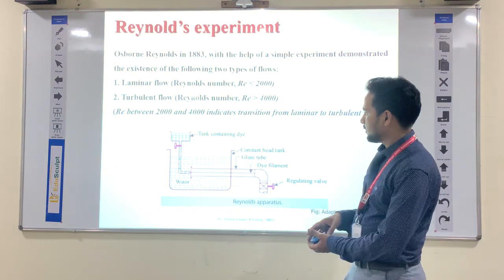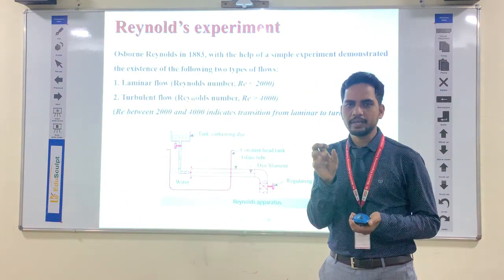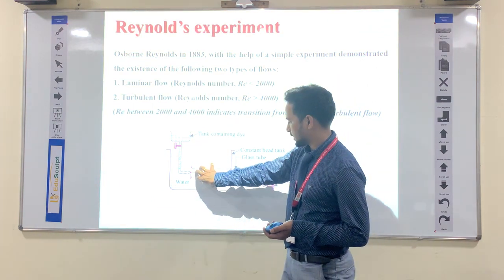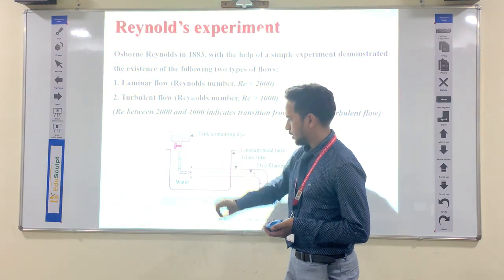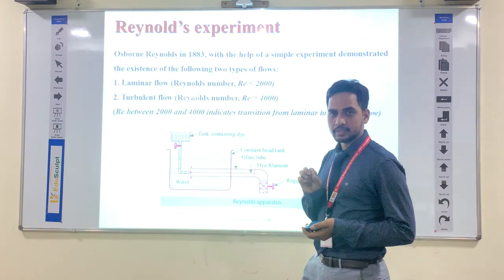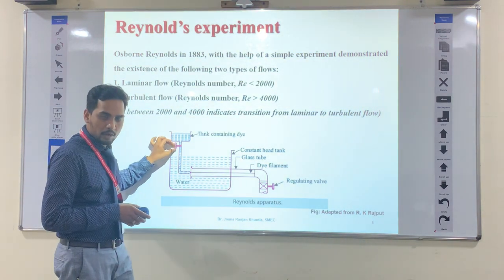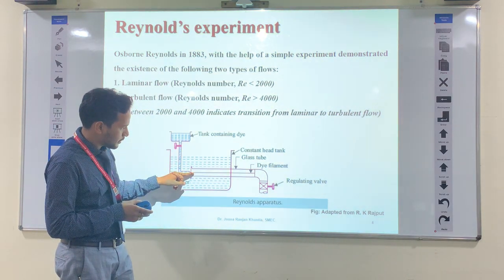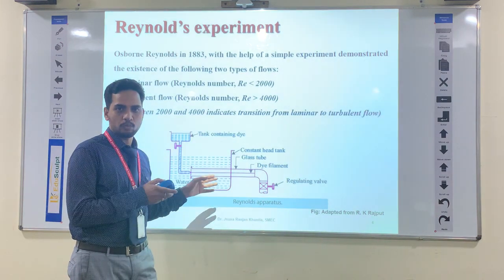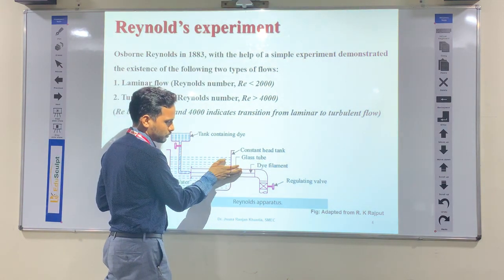In his experiment, Reynolds used one tank containing dye — a colored element. There is a control valve to regulate how much dye flows toward the water. There is also a tank containing water at a constant head. The dye tank has a controlled valve, and when opened, dye enters the pipe. The pipe is a glass tube, used so we can observe what is happening inside.